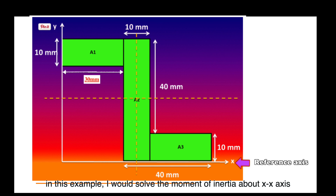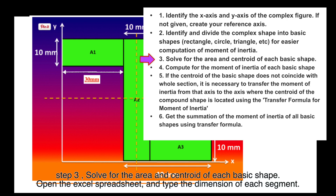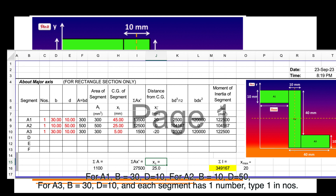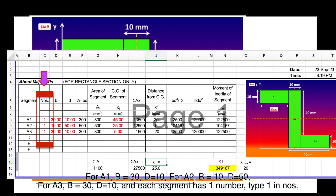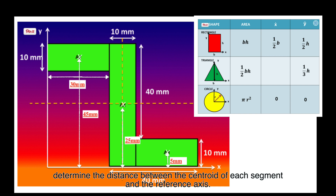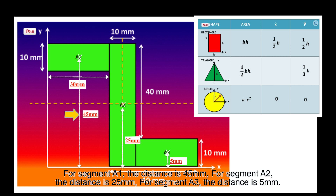In this example, I will solve the moment of inertia about the x-axis. Step 3: solve for the area and centroid of each basic shape. Open the Excel spreadsheet and type the dimension of each segment. For A1: b = 30, d = 10. For A2: b = 10, d = 50. For A3: b = 30, d = 10. Each segment has one number — type 1 in NOS. Then locate the centroid of each segment and determine the distance between the centroid of each segment and the reference axis. For segment A1, the distance is 45 mm.